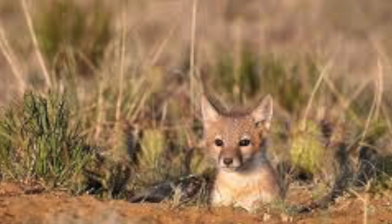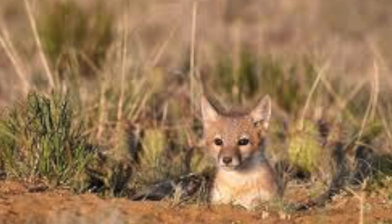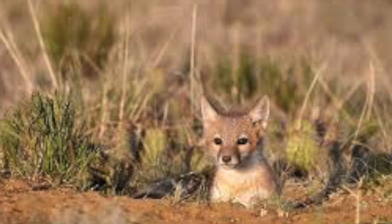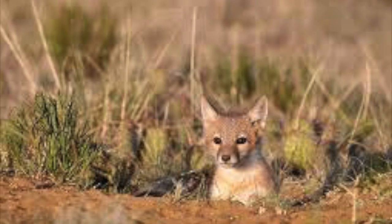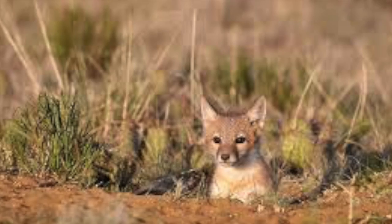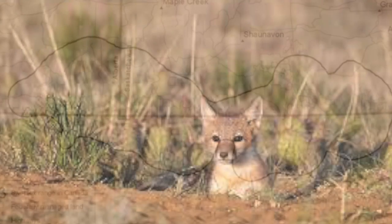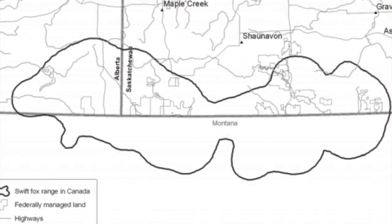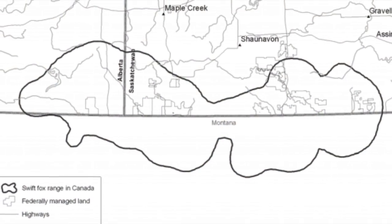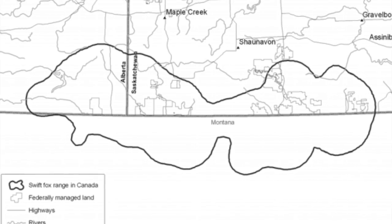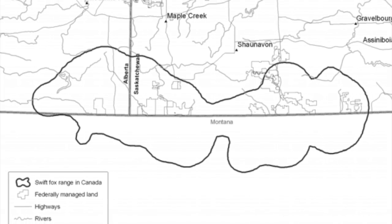Swift foxes live in burrows dug by badgers that have been abandoned, which can be found in the grasslands of Alberta and Saskatchewan. Swift foxes have a random population distribution.